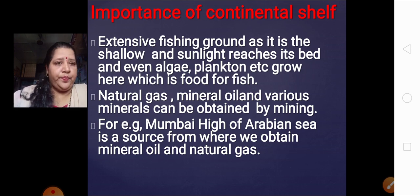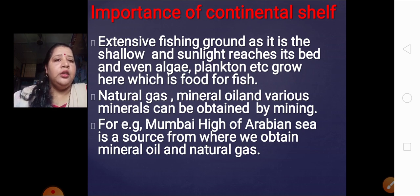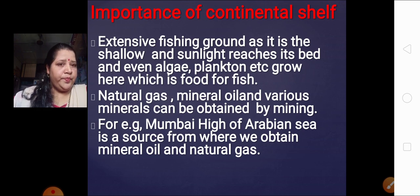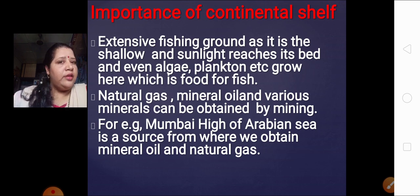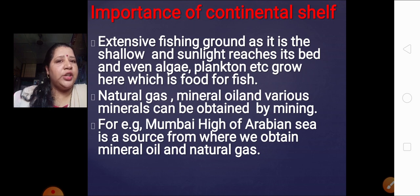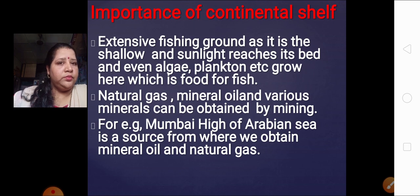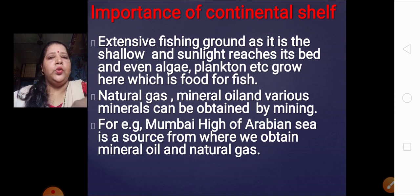An example is Mumbai High, situated in the Arabian Sea, where we have set up a plant to obtain mineral oil and natural gas. So the importance of the continental shelf is: it is an extensive fishing ground, and we can also get natural gas and mineral oil from here.